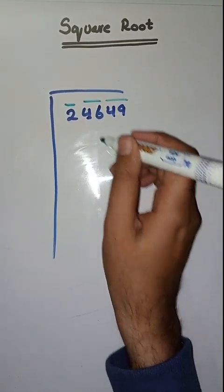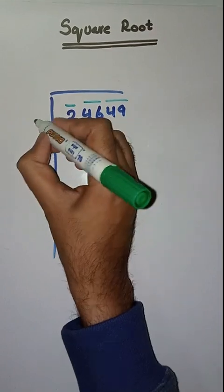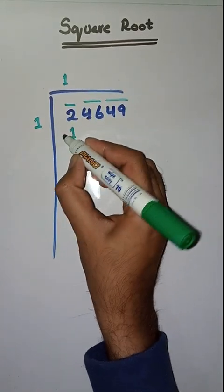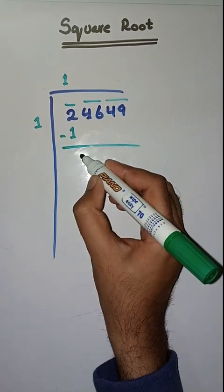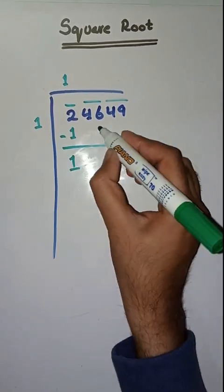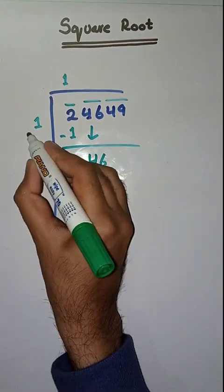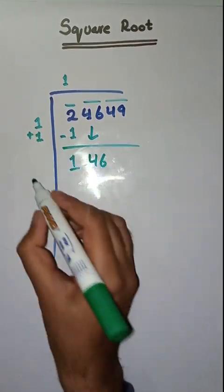So what will we do? First we have to solve 2. So we take a number 1. 1 times 1 is 1. We subtract and get 1. Next pair is 46. We bring it down. Here we do twice of this: 1 plus 1 is equal to 2.